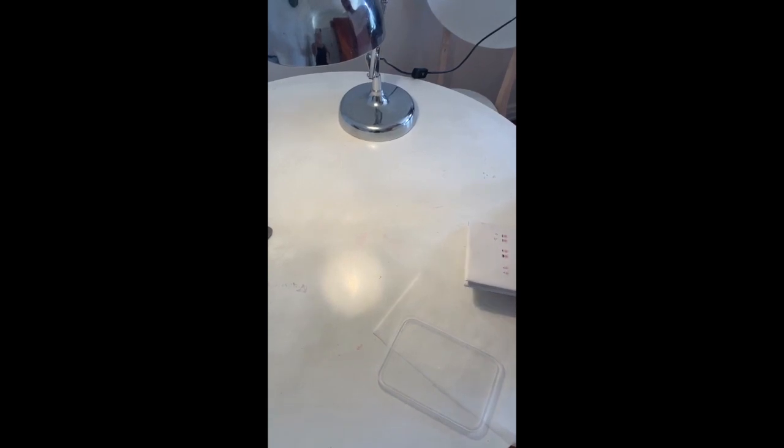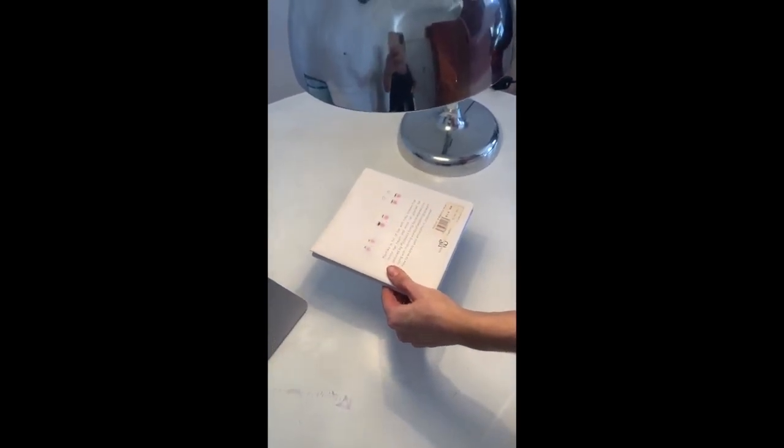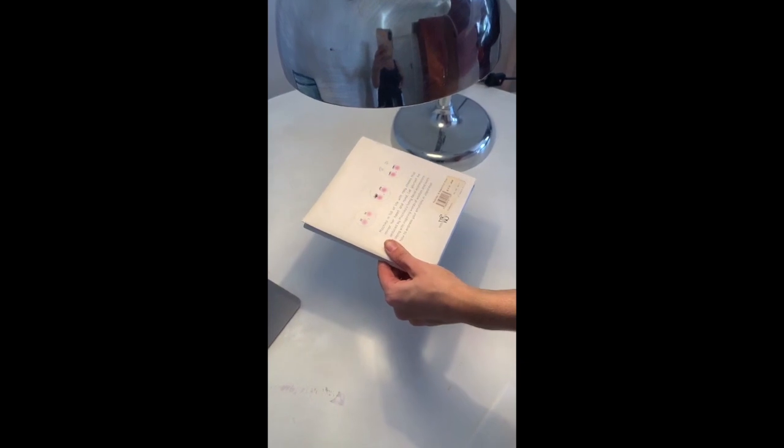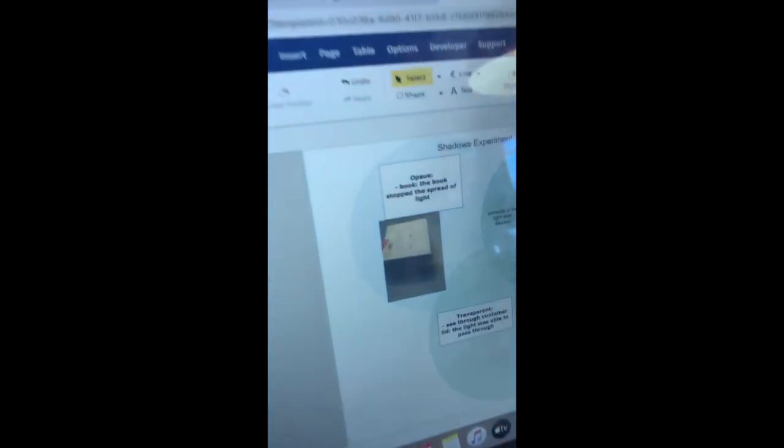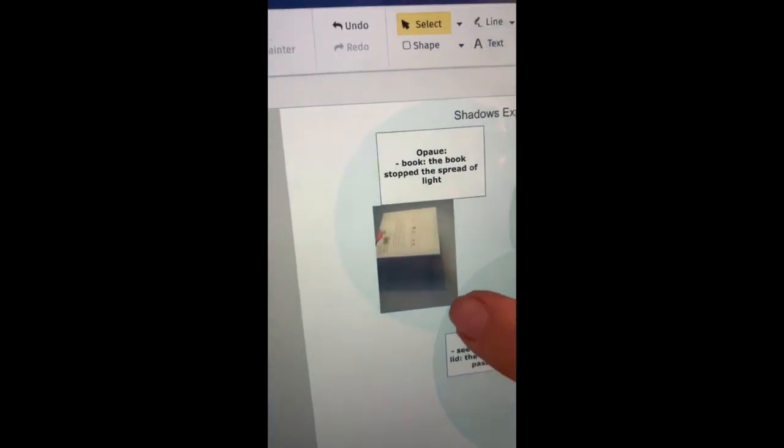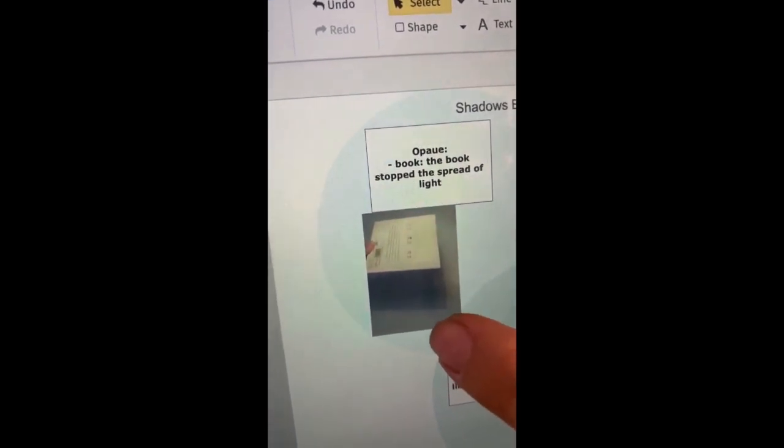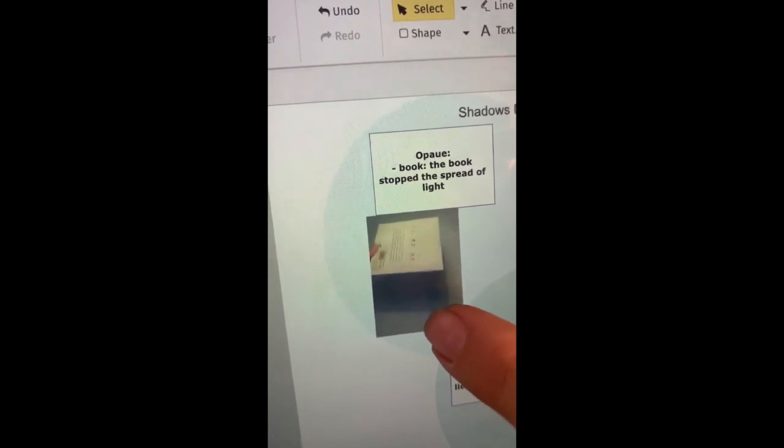Step 6. Place the book underneath the lamp. What do you notice? Step 7. Students should record their observations and result using smart draw, whether the object is either transparent, translucent or opaque. Step 8. Looking at the example here, the student has uploaded a photo and written that the book stopped the spread of light.